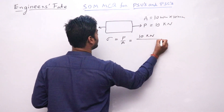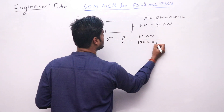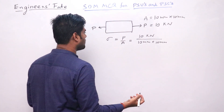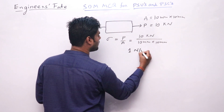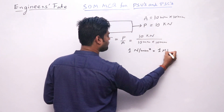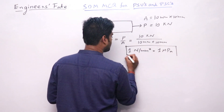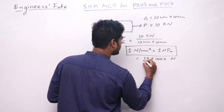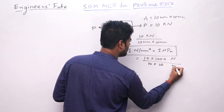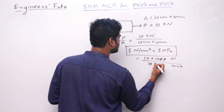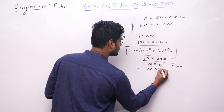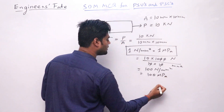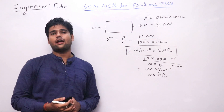P is given as 10 kN and area is given as 10 mm by 10 mm. You can see in the options the unit is given in MPa. Just remember that 1 N per mm² equals 1 MPa — that is the only trick for this question. So, 10 × 1000 N divided by 10 × 10 mm² gives 100 N/mm², or 100 MPa. Very easy question.